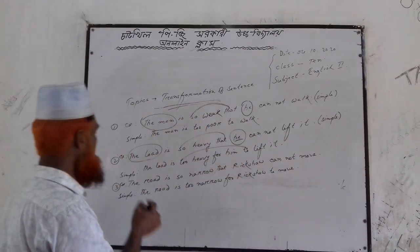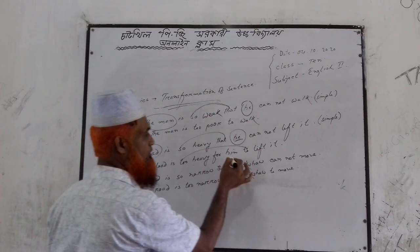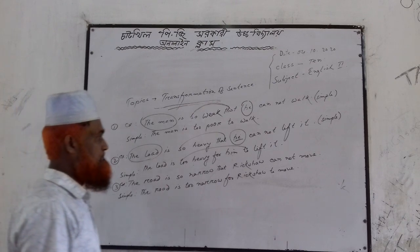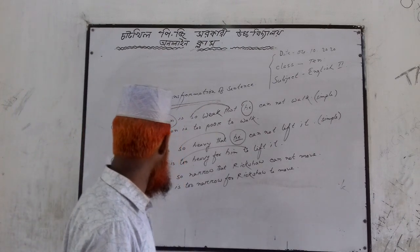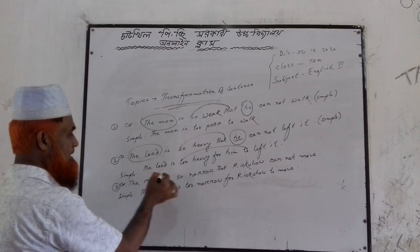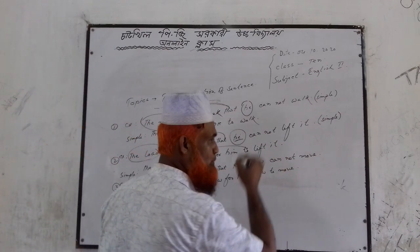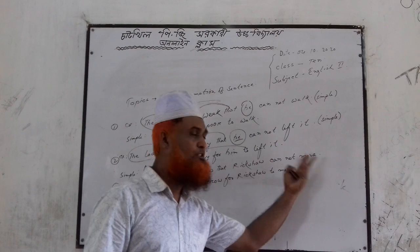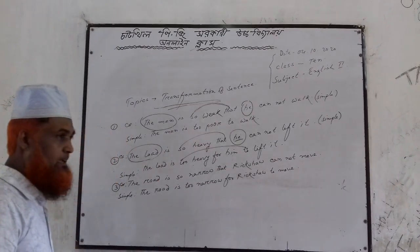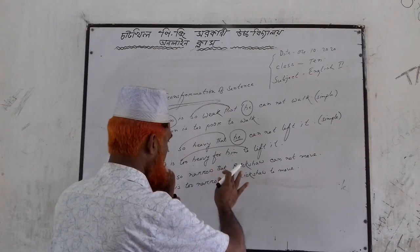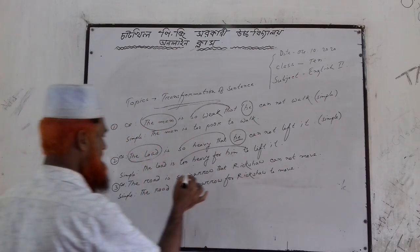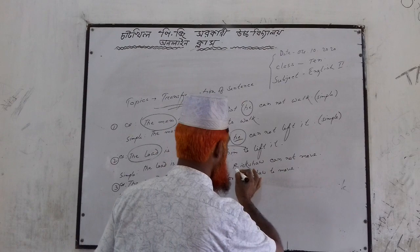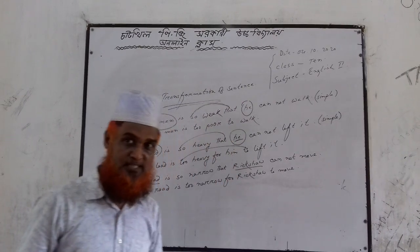Look again: 'The road is so narrow that the rickshaw cannot move.' Both the clauses have subjects that are not the same. The subordinate clause subject is 'road' and the principle clause subject is 'rickshaw'. Are both subjects the same? No. So you have to do the same transformation — use 'for' plus the objective form because the subjects are different.